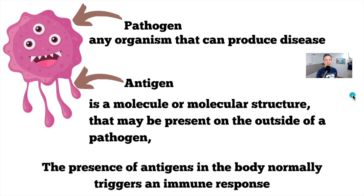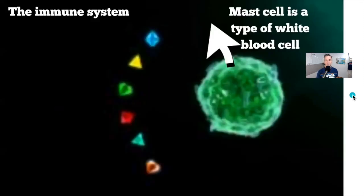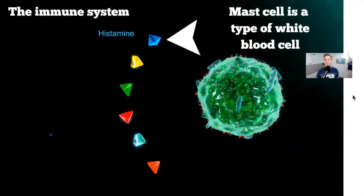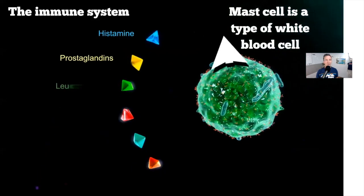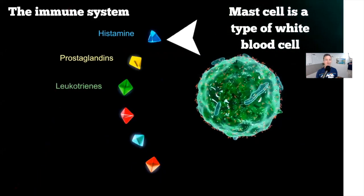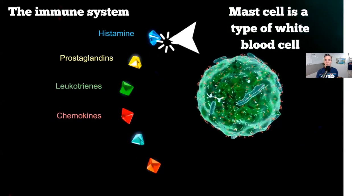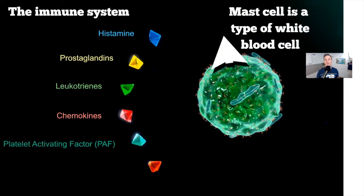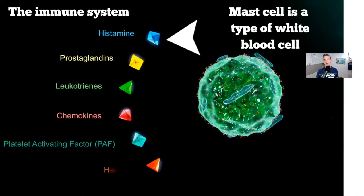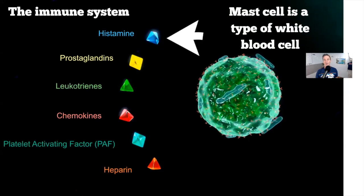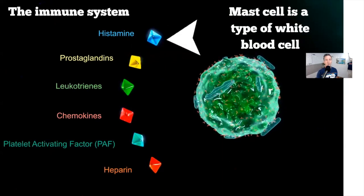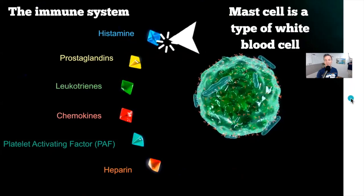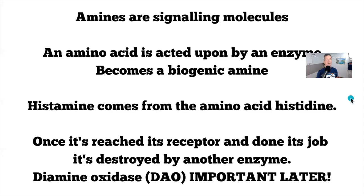Most people have heard of histamine. There are a few other things that are released when there is an immune response. The mast cells — which are a type of white blood cell — will release histamine.